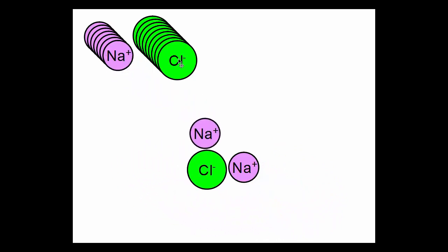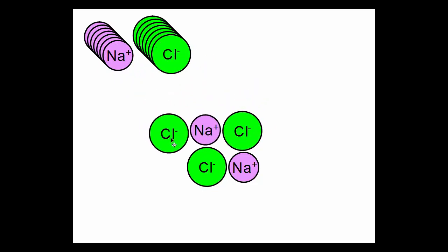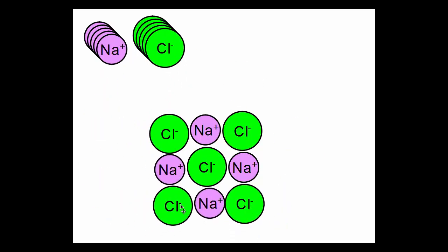It also means that if other ions approach the original ion, they can also be attracted to it, and new bonds can be formed, as long as the positive and negative ions are arranged alternately.